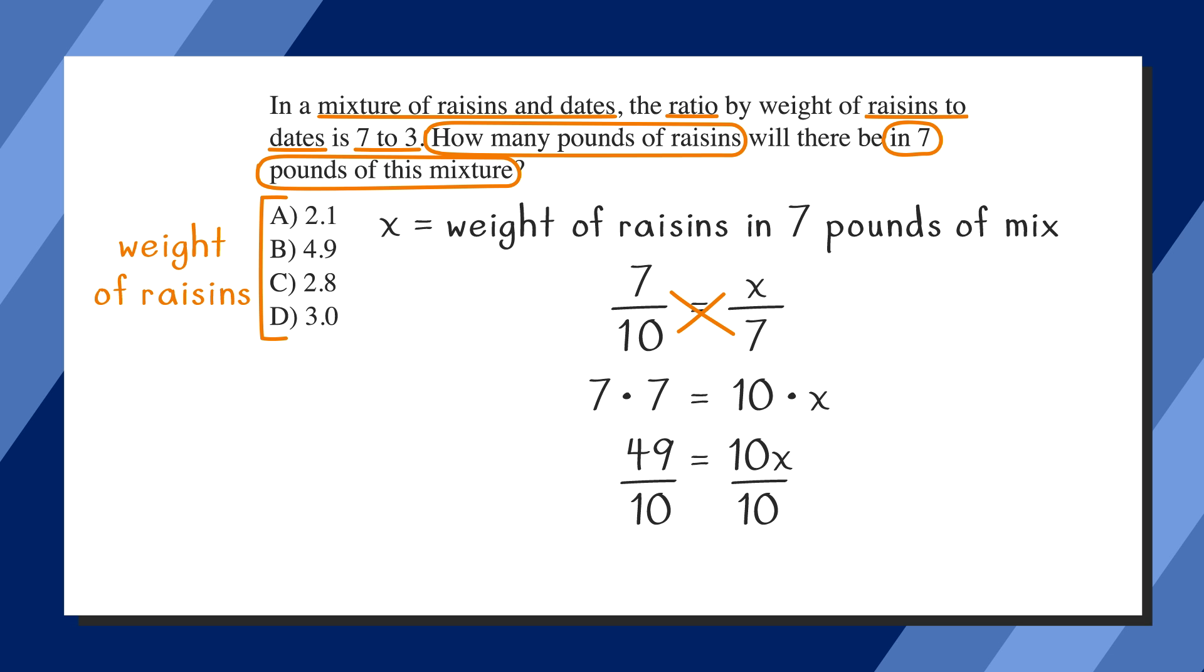Dividing both sides by 10, we get x equals 4.9. Or that the weight of raisins in a seven-pound bag of the raisin and date mix is 4.9. Looking at our answer choices, choice B is 4.9. Let's circle it because that's the right answer.